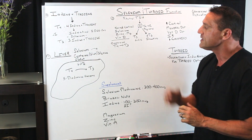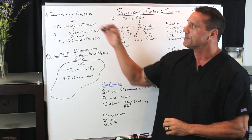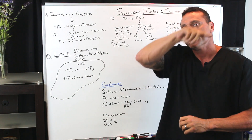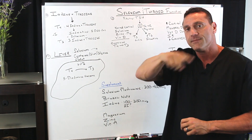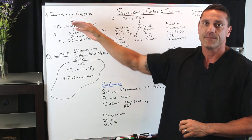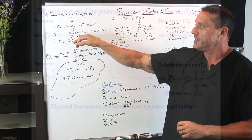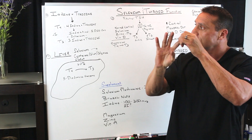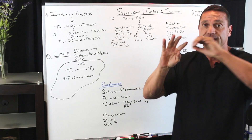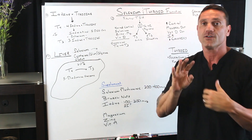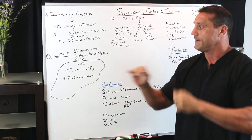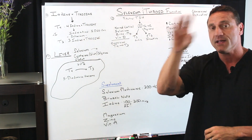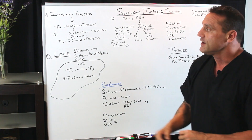What is thyroid hormone? Thyroid hormone is one molecule of tyrosine surrounded by four molecules of iodine. In a process called iodination, one of those molecules of iodine gets cleaved off to form T3 — one molecule of tyrosine and three molecules of iodine.